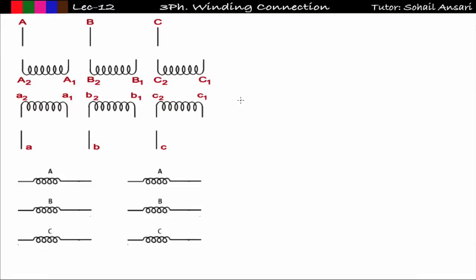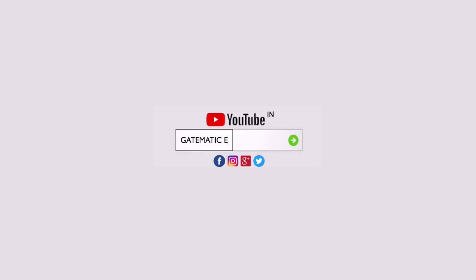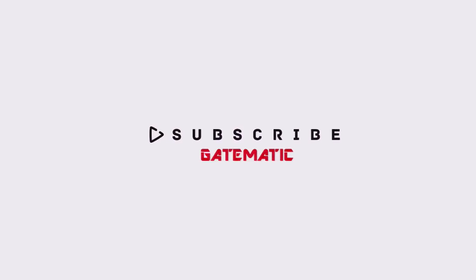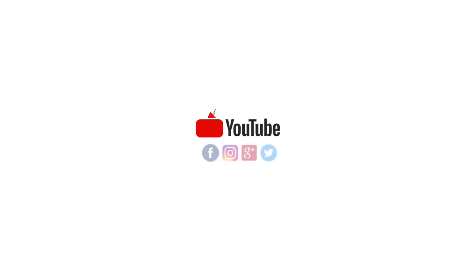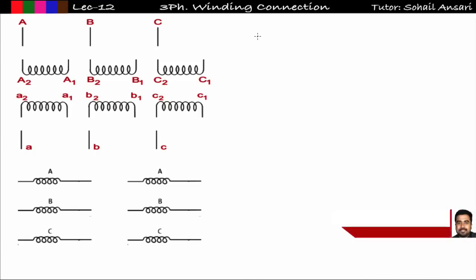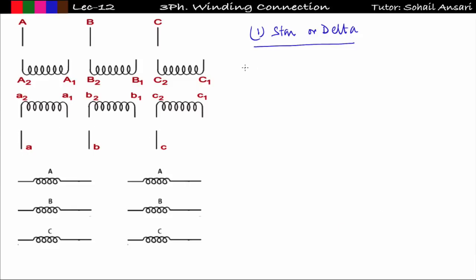Welcome to Getmatic. In the previous lecture we covered harmonics in three-phase transformers and the construction of three-phase transformers. Now in this lecture we will start a new topic: three-phase winding connections. We'll see how many types of winding connections are possible in a three-phase transformer. In three-phase winding, there are mainly two types: star connection and delta connection.